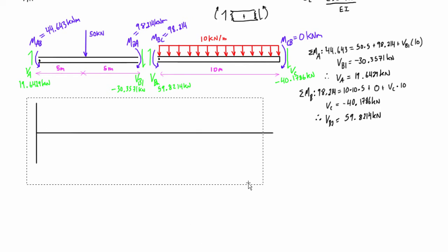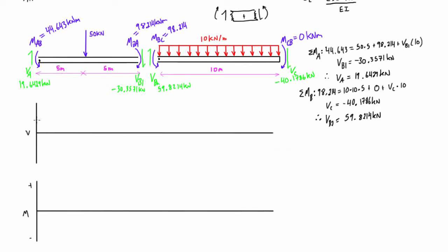The first thing we want to do is set up the shear force and bending moment diagrams and plot what we can. We do know that we have positive shear right at the left-hand side of this first span, so let's put this about right there — that's 19.642. We know the shear at the right-hand side of the span, or just to the left of point B, and that is going to be down here — negative 30.3571 kilonewtons.